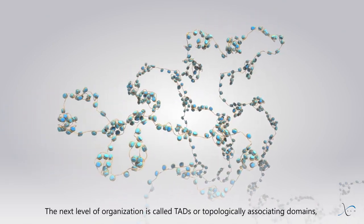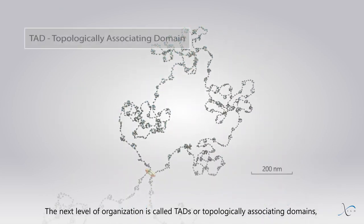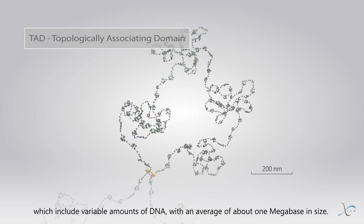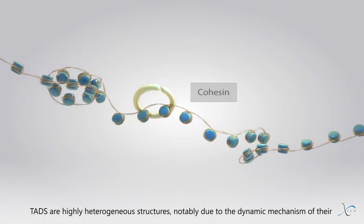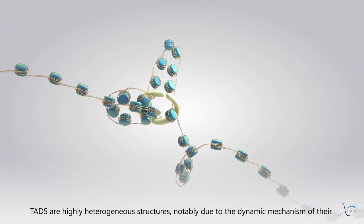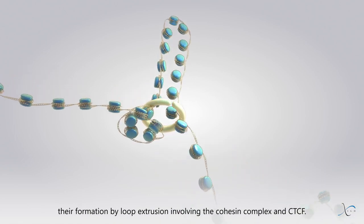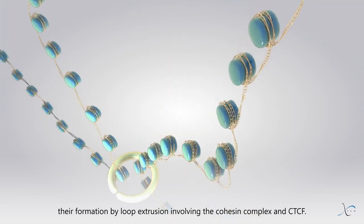The next level of organization is called TADs, or Topologically Associating Domains, which include variable amounts of DNA with an average of about 1 megabase in size. TADs are highly heterogeneous structures, notably due to the dynamic mechanism of their formation by loop extrusion involving the cohesin complex and CTCF.